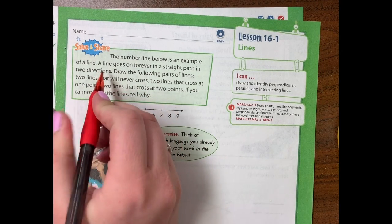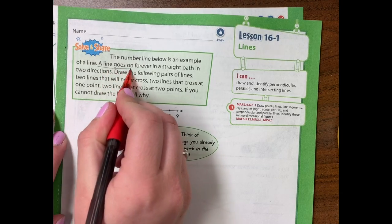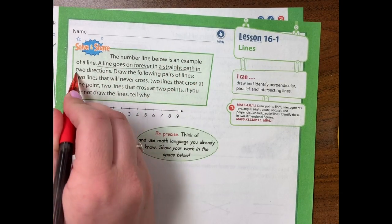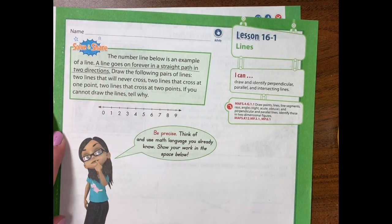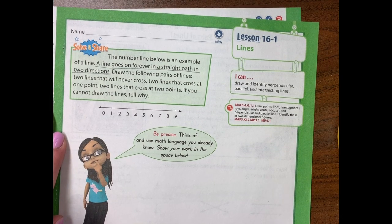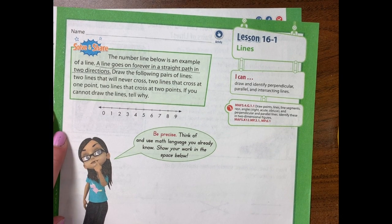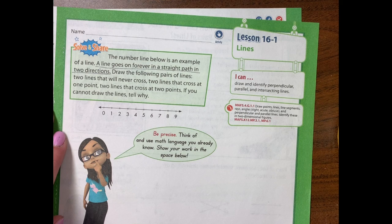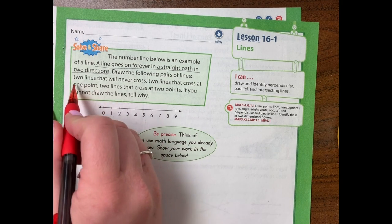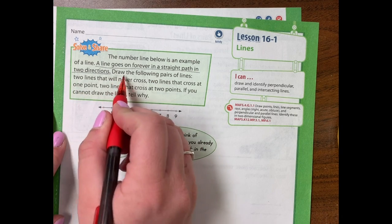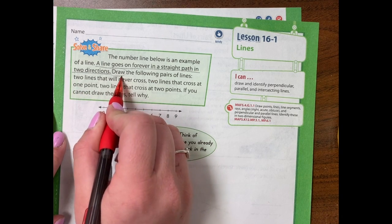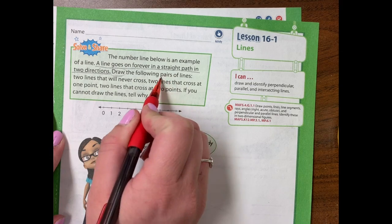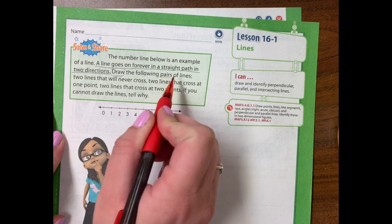A really good thing is a line goes on forever in a straight path in two directions. I want you to look around you and see if you can find an example of a line around you now. After that, it's telling us to draw the following pairs. Pairs means two of lines.